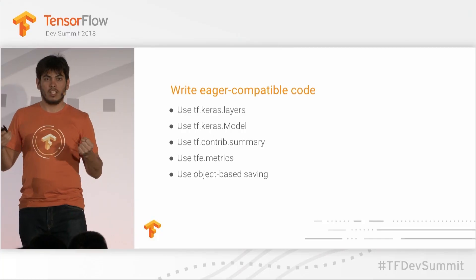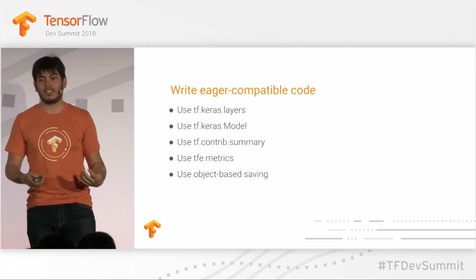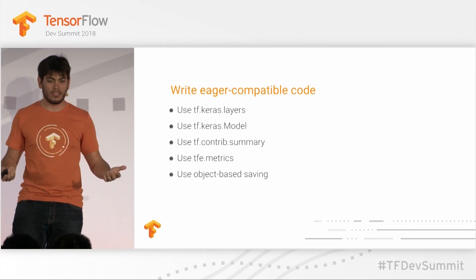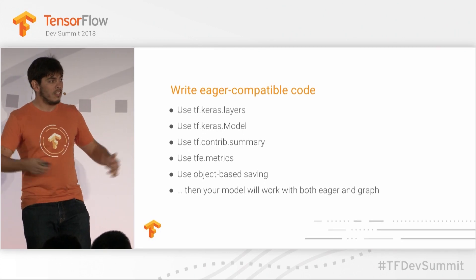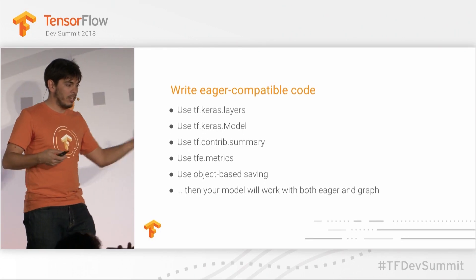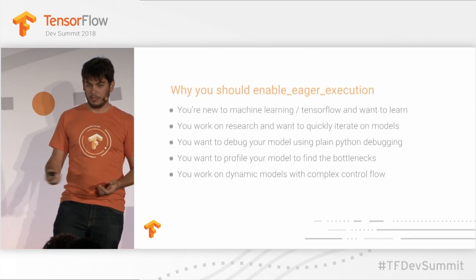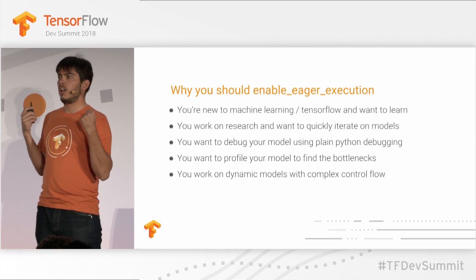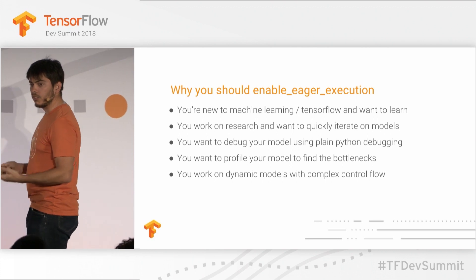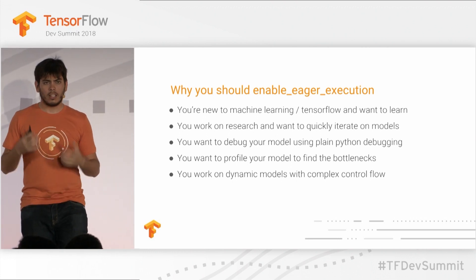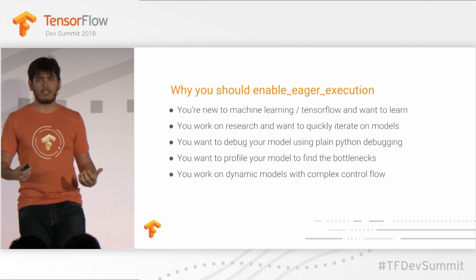Once your code is working in Eager execution, you can flip a switch and it will build a graph without errors, so it's a much smoother way to approach the whole process. It's not as if it has to be a prototype — you can get really good performance. One of my slides talked about how in ResNet models and LSTM models with the right kernels, you have as good performance as with graph execution. This is a serious framework you can use for real development, but it's also much easier to play around in.